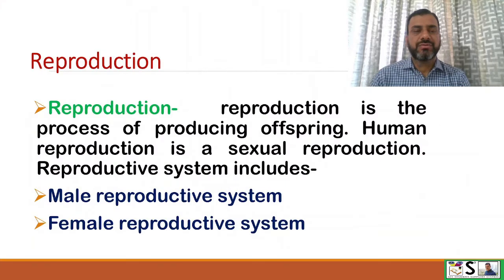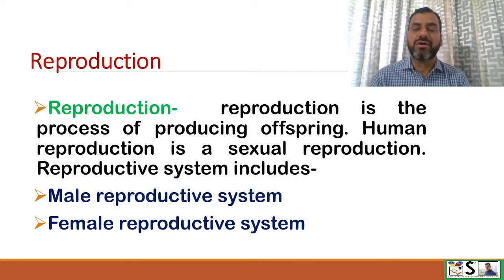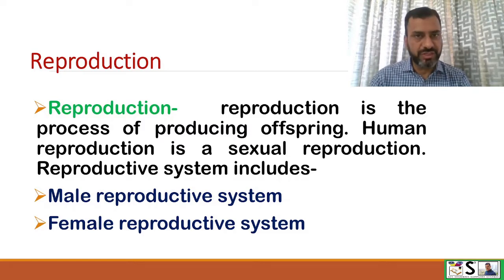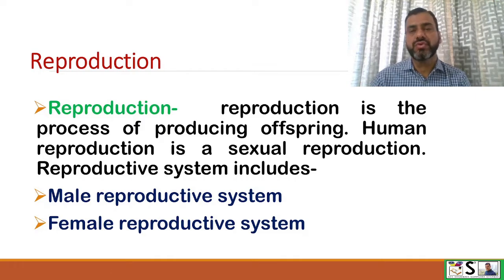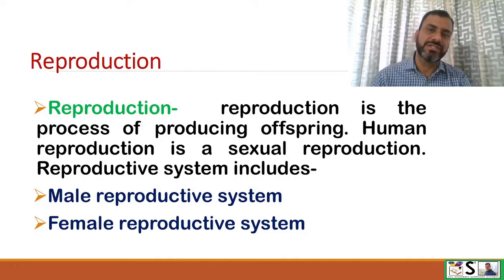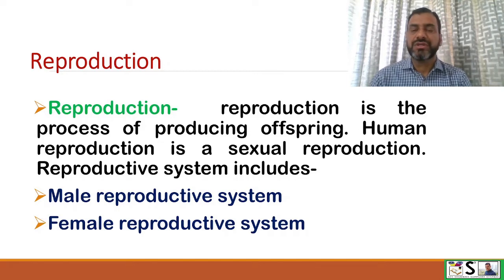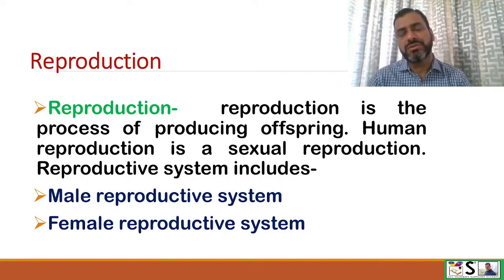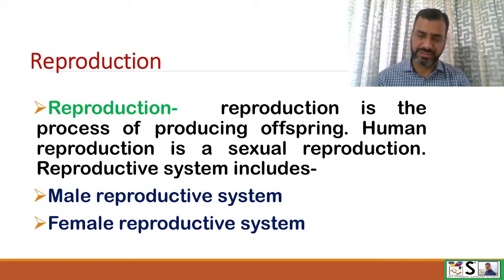What is reproduction? Reproduction is the process of producing offspring, and human reproduction is a sexual reproduction which needs two types of systems: the male reproductive system and the female reproductive system. In today's lecture we will discuss about the male reproductive system.